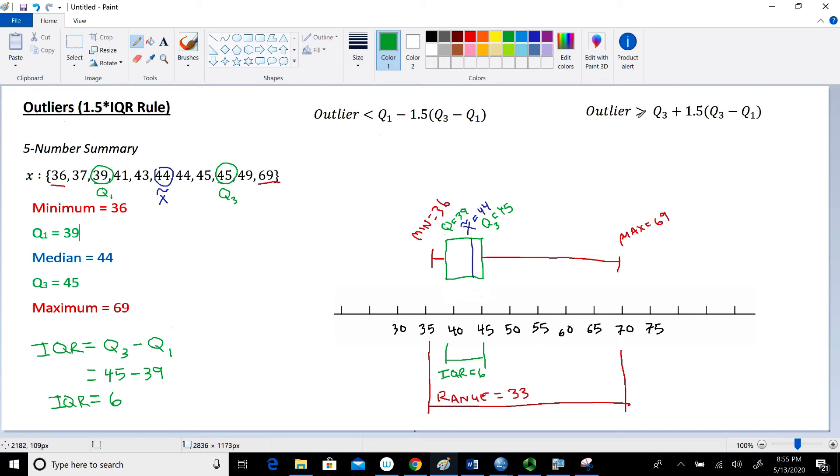And then on the right side, we have to find values that are greater than our third quartile plus 1.5 times the IQR, Q3 minus Q1.